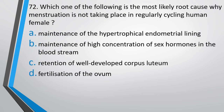Question number 72. Which one of the following is the most likely root cause why menstruation is not taking place in a regularly cycling human female? (A) Maintenance of hypertrophied endometrial lining, (B) Maintenance of high concentration of sex hormones in bloodstream, (C) Retention of well-developed corpus luteum, or (D) Fertilization of ovum. A female who was having a regular menstrual cycle suddenly has her menstruation stop. The correct answer is option D — it might be because of the fertilization of the ovum.